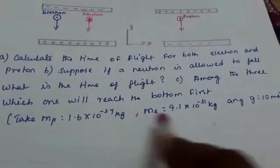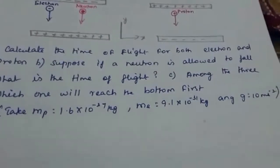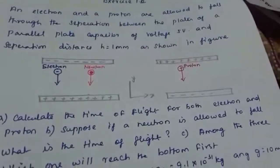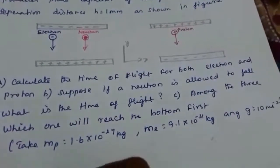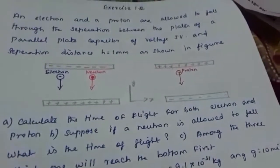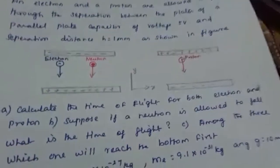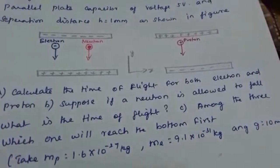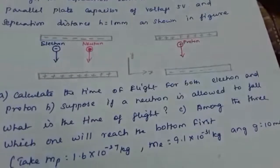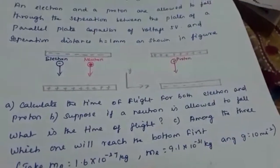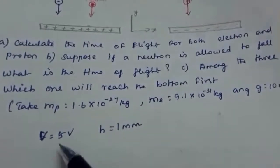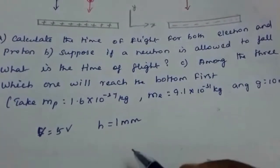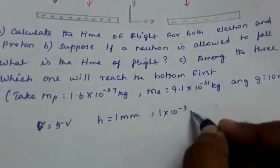The given data: mass of proton and mass of electron are given, g value is given, and the electric field can be found from the voltage. The potential is 5 volt, and the separation h is 1 millimeter, which is 1×10⁻³ meter.